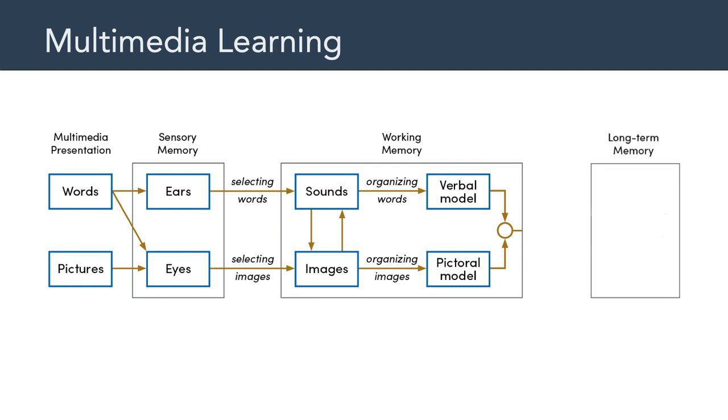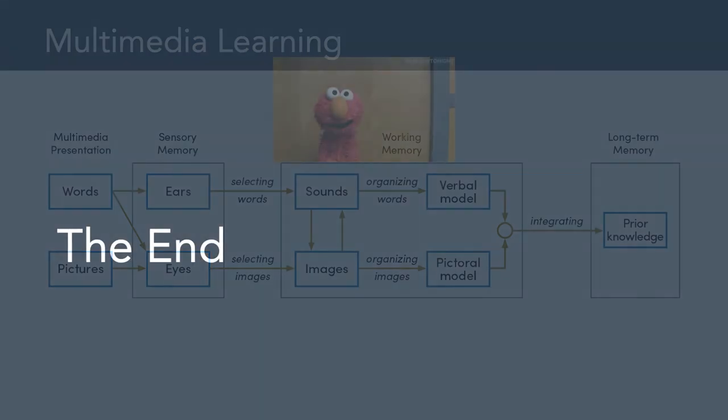And notice that there are two tracks there, one for the auditory channel and one for the visual channel. That information can be integrated in working memory. And then ultimately, the next step is to integrate that information with what we already know about the world. In other words, our prior knowledge. And if something new is processed in working memory and successfully integrated with prior knowledge, then it gets stored into our long-term memory for later use.